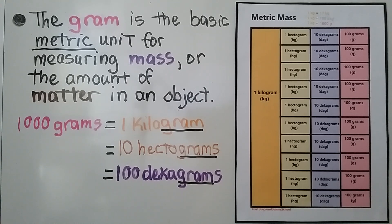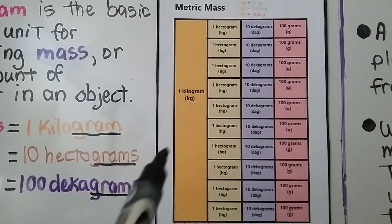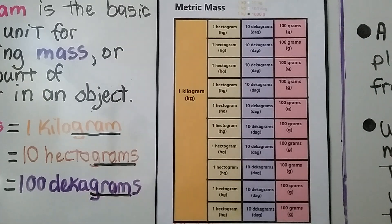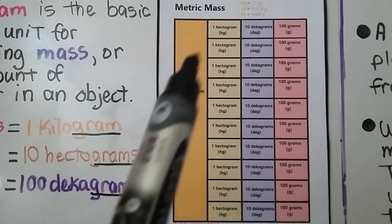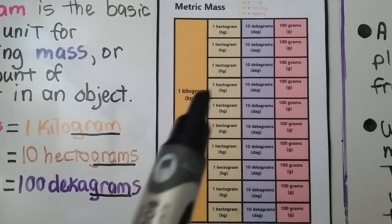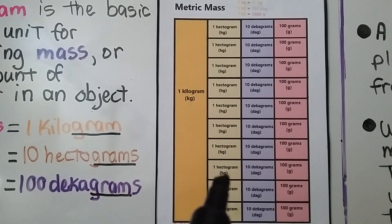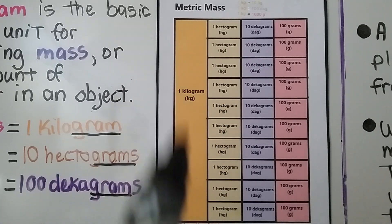I have a metric mass chart here. Let's take a closer look. Here we have 1 kilogram, and if we count 10 hectograms, that would be equal to 1 kilogram.